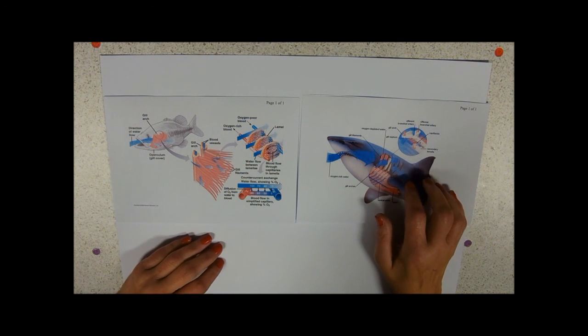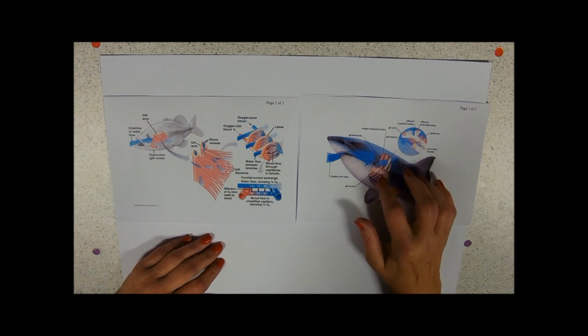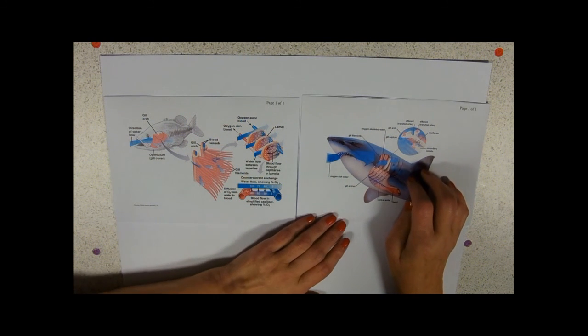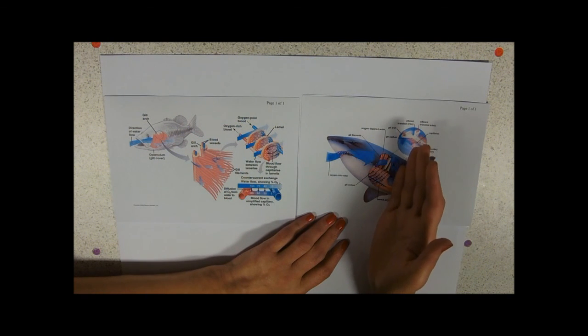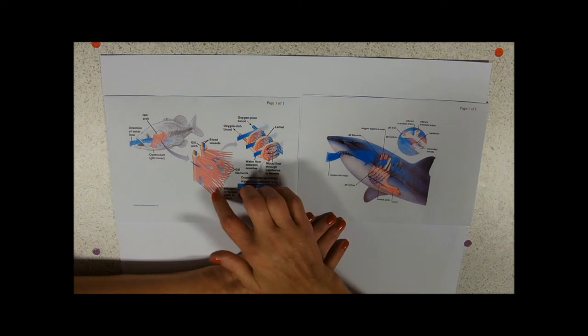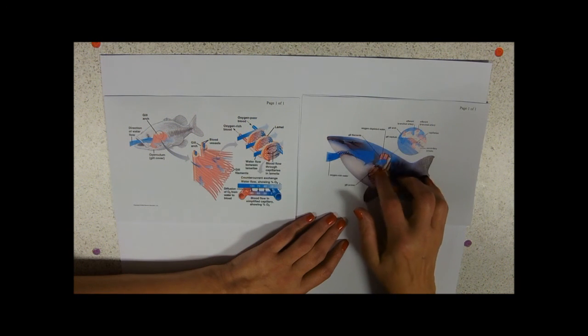In sharks, they're behind what are called gill slits. So, same arrangement, you've got still gill arches with these very feathery gill filaments attached to them.